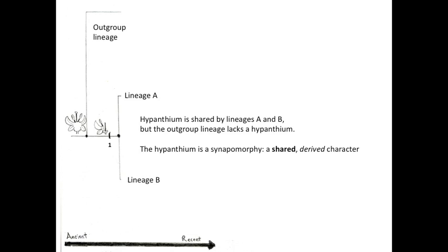Next we imagine the population splits. Both new lineages have the derived character state of a cup-shaped receptacle, called a hypanthium. The hypanthium is now a synapomorphy between lineages A and B. Both lineages share the character state, and it is derived because the outgroup lineage, which represents the ancestral character states, lacks a hypanthium.